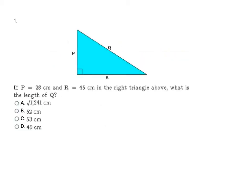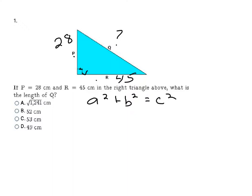In this problem, they're telling us that side P is 28 centimeters, side R is 45 centimeters, and it wants to know what is the length of Q. When you're doing these problems, I highly recommend that you draw a right triangle and label the sides so that you can see which sides are your legs and which one is your hypotenuse. Here, P and R are going to be my legs because they make the right angle. So 28 and 45 are my legs.